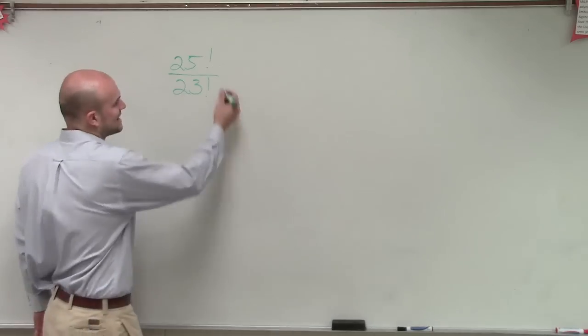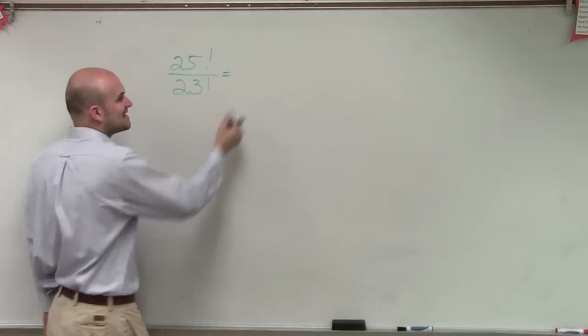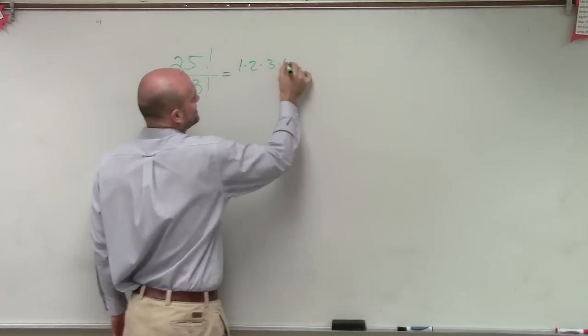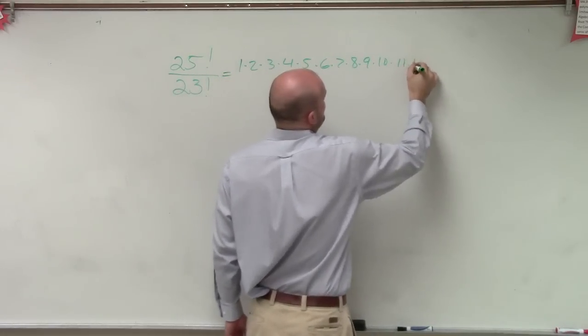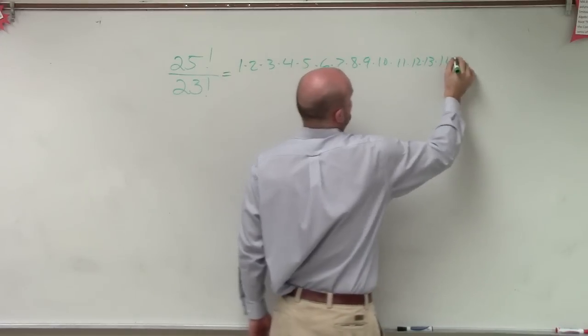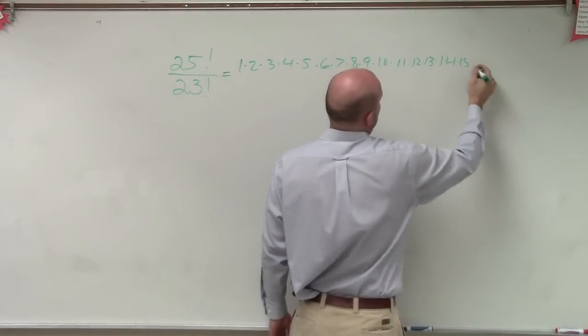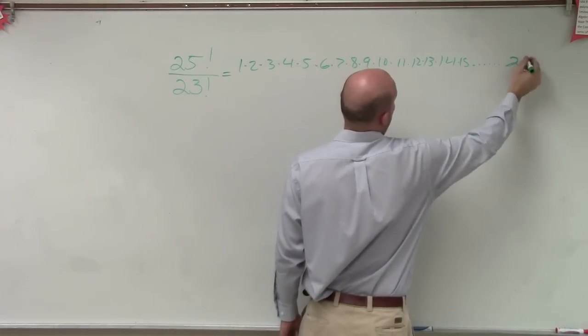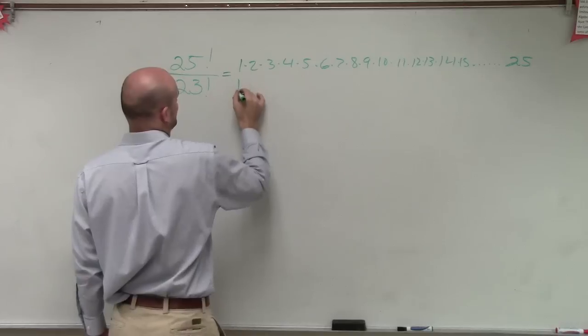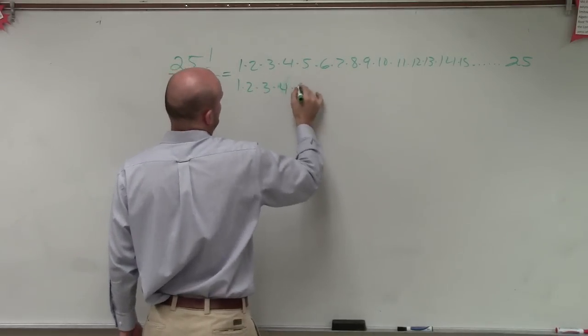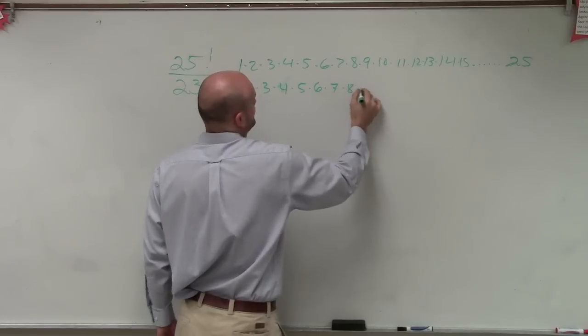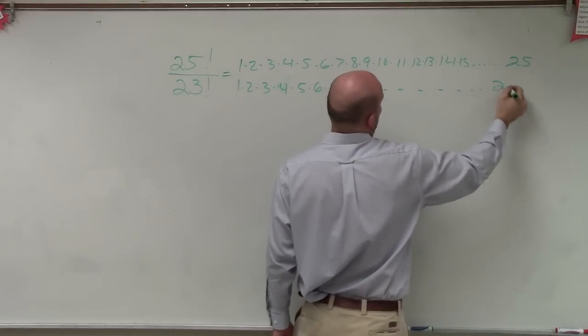But what I want you guys to understand is this represents 1 times 2 times 3 times 4 times 5 times 6 times 7 times 8 times 9 times 10 times 11 times 12 times 13 times 14 times 15 dot dot dot 25, right? This equals 1 times 2 times 3 times 4 times 5 times 6 times 7 times 8 dot dot dot 23.